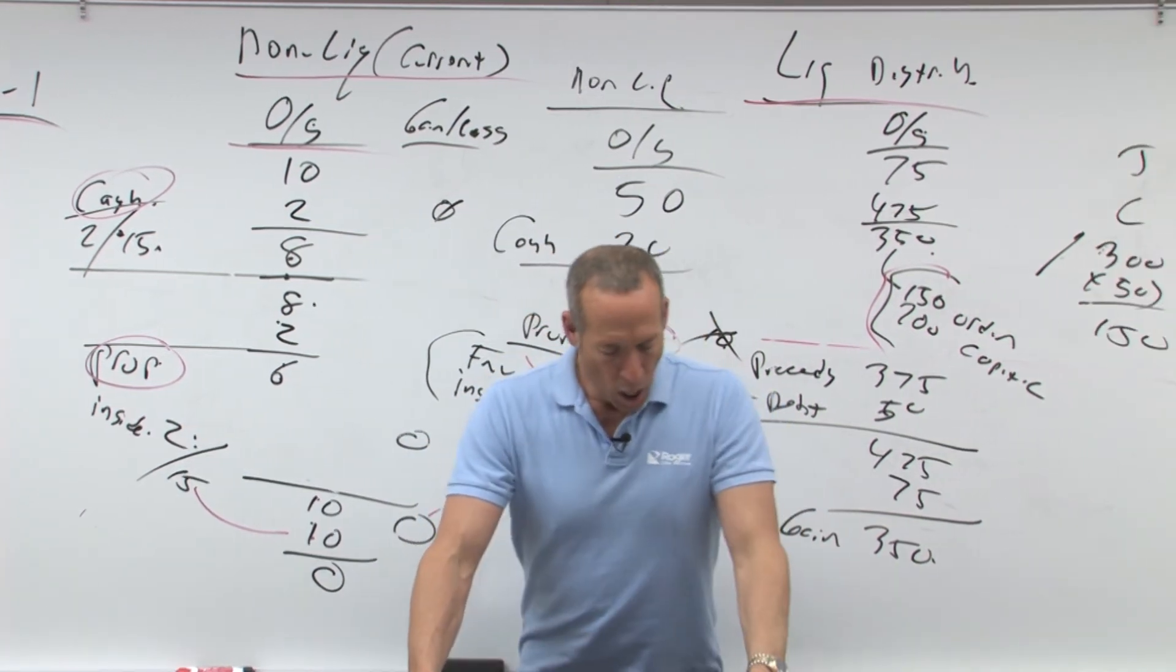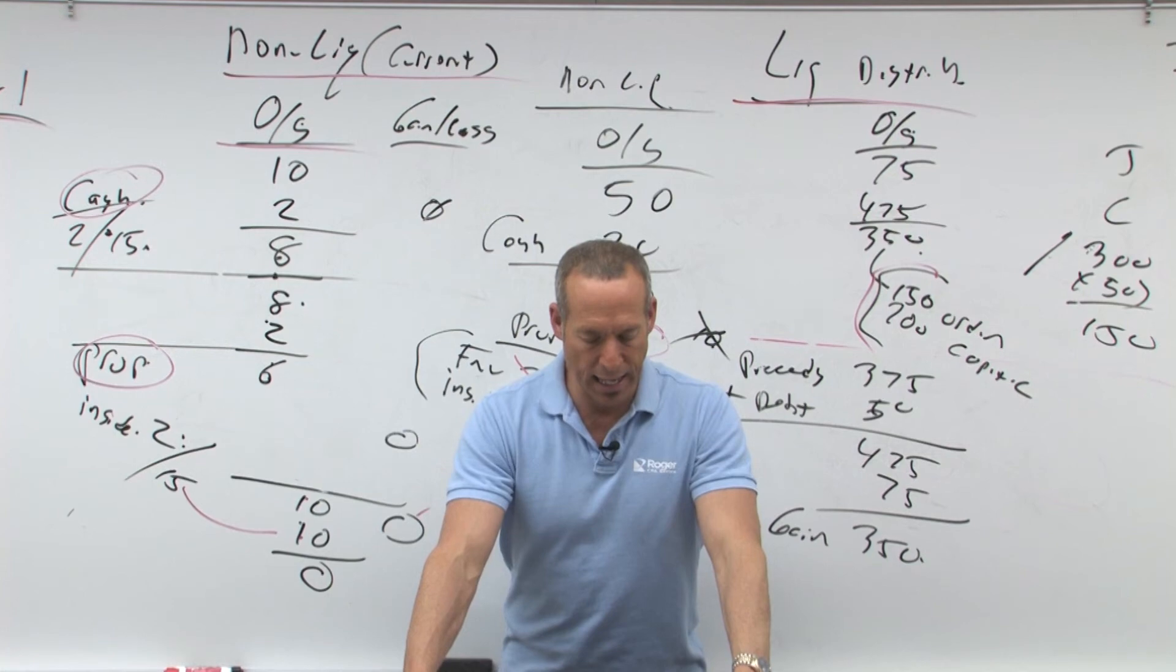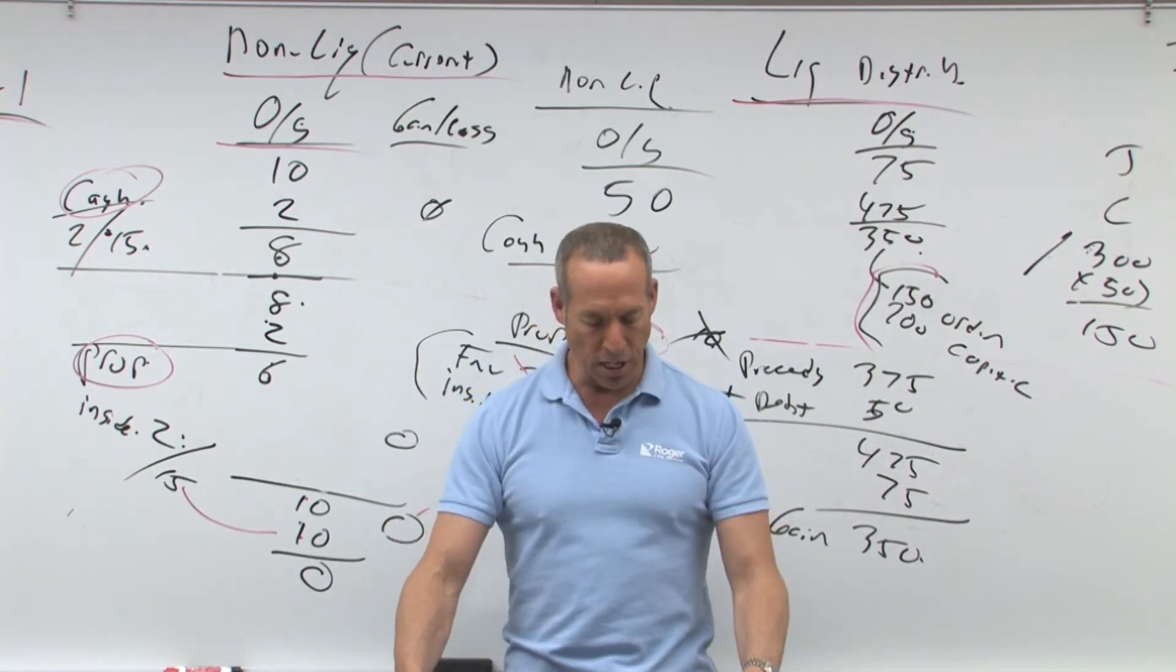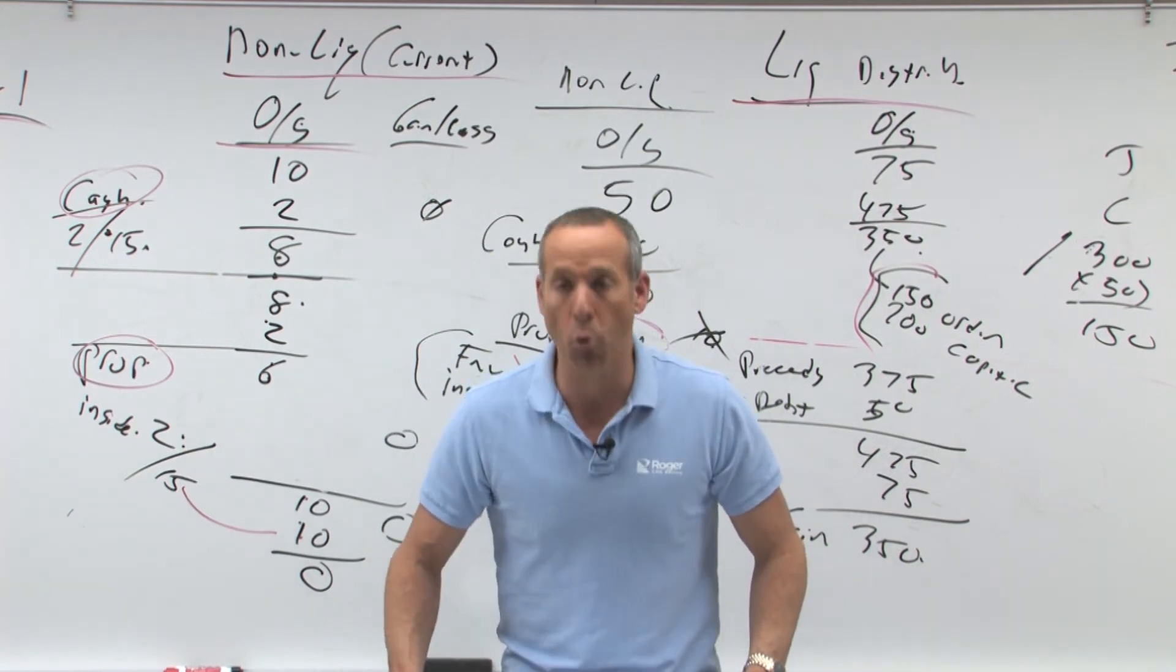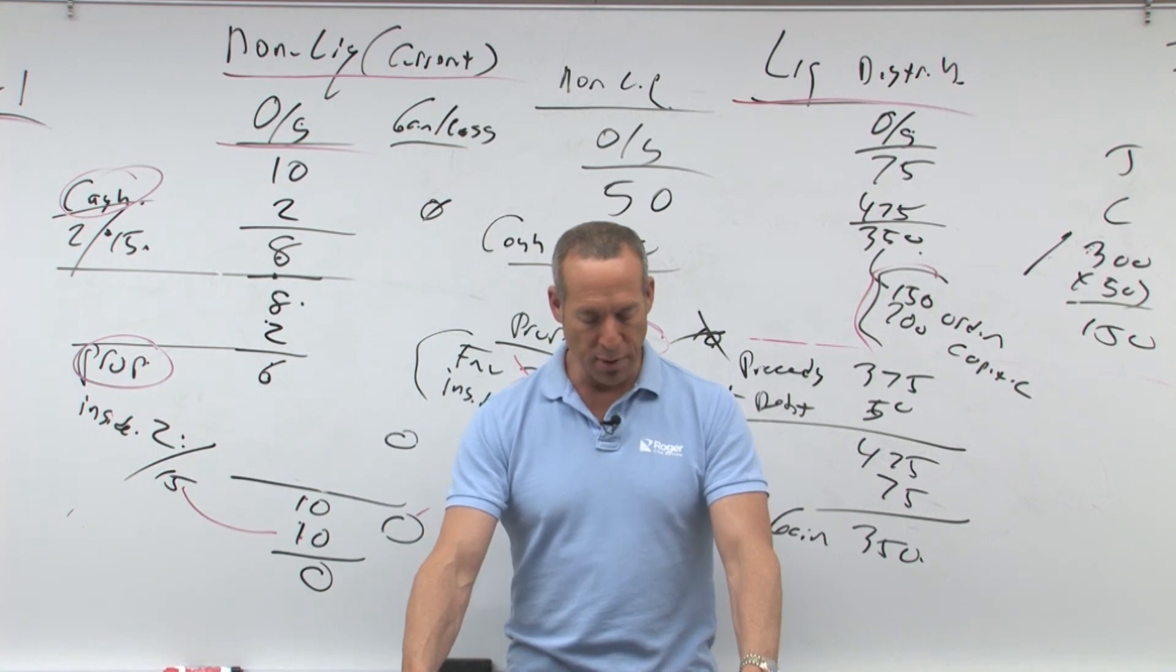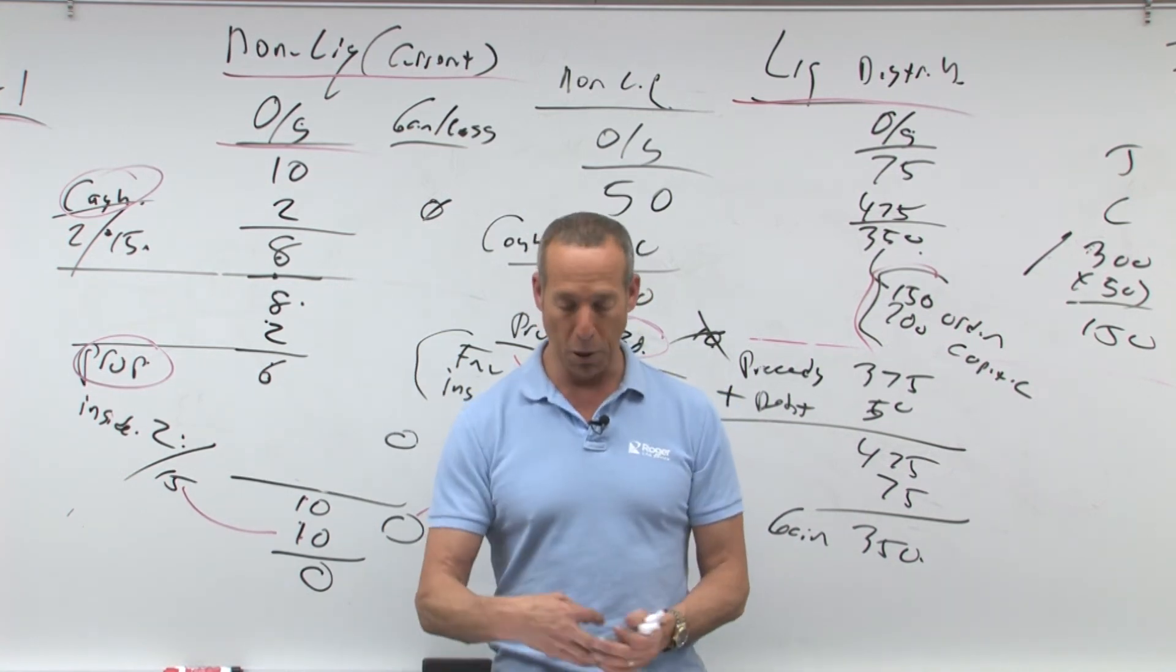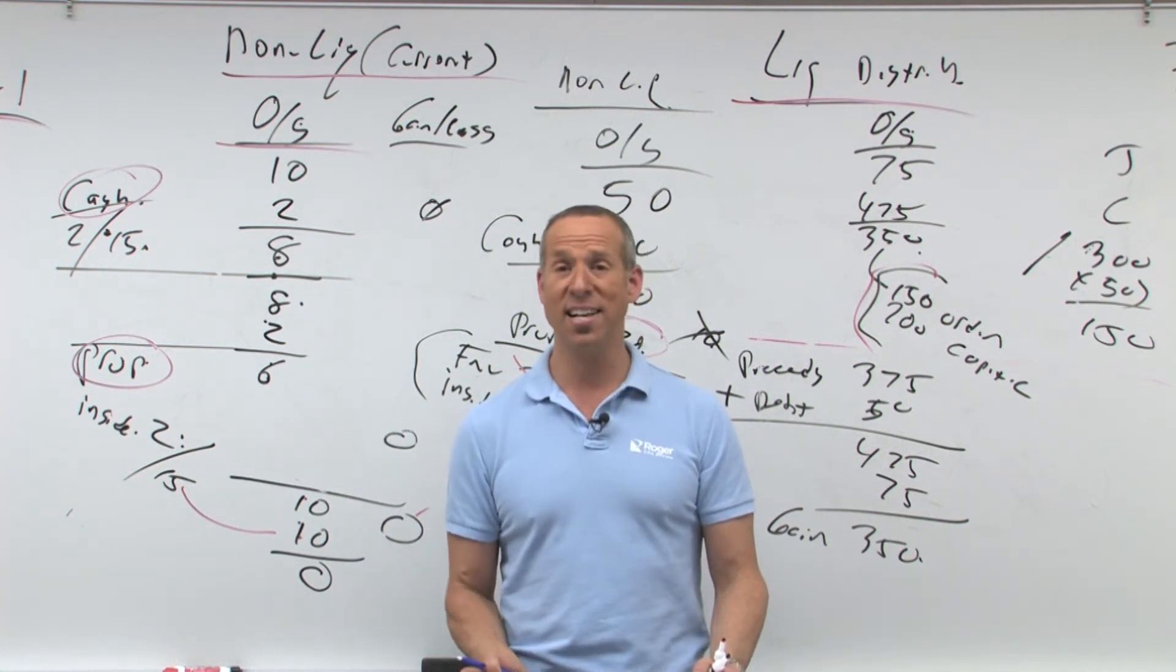Number nine, under which of the following circumstances is a partnership that is not an electing large partnership considered terminated for tax purposes? Fifty-five percent of the assets in the partnership capital and profits are sold within 12 months. Yeah, 50% or more, yes. The partnership's business and financial operations are discontinued. Yes, both of those. Alright? In a minute, let's do a task-based simulation.